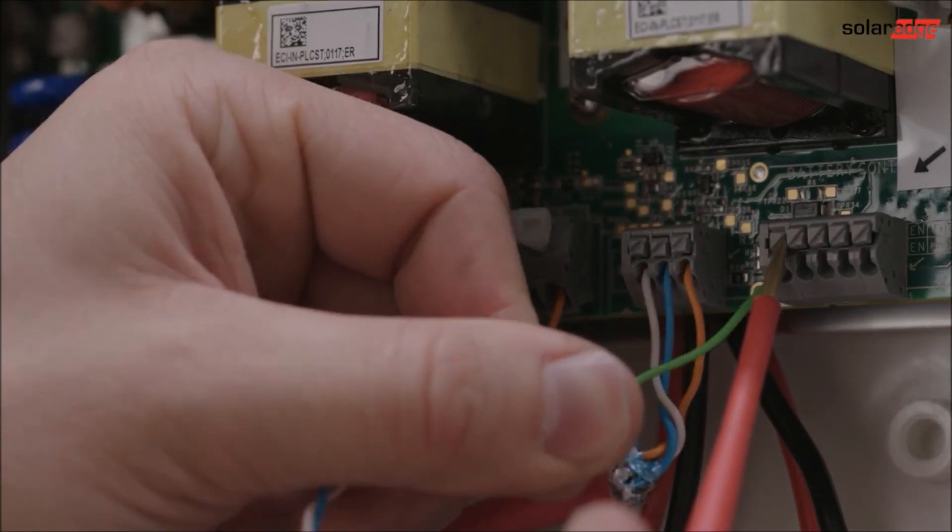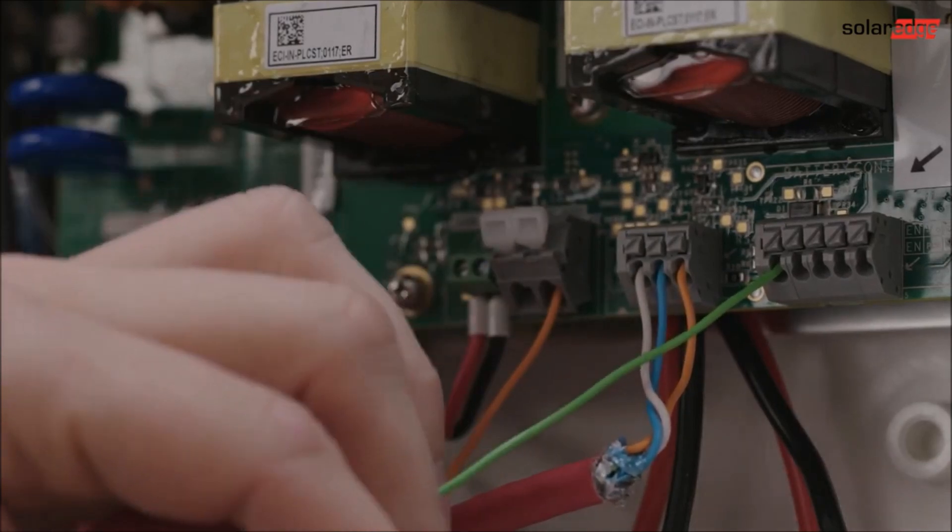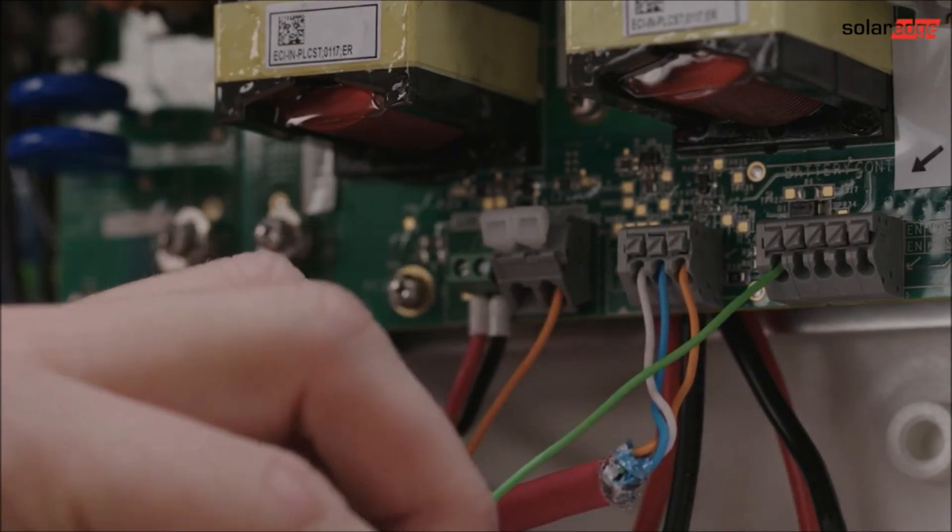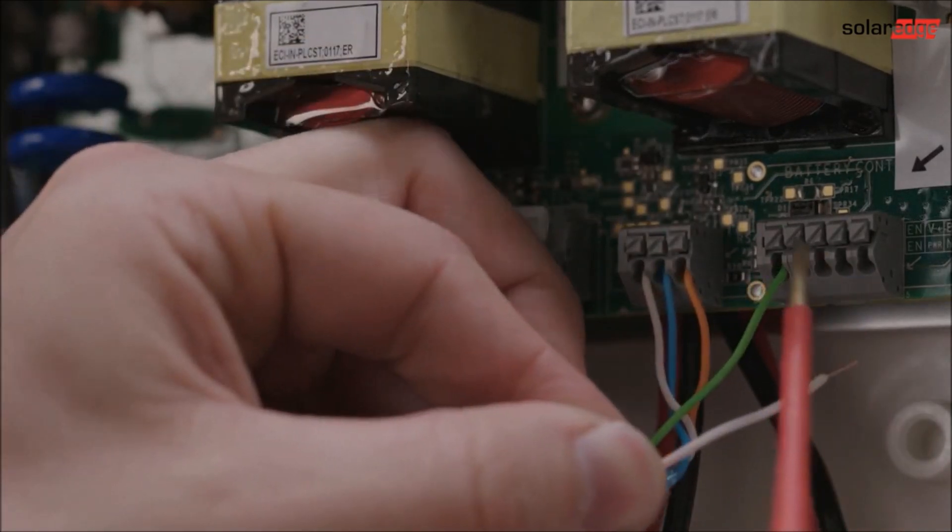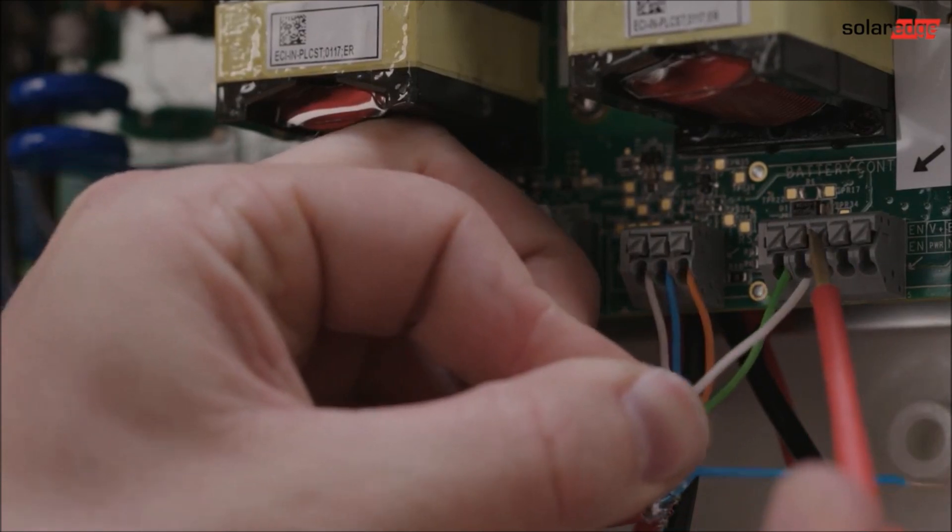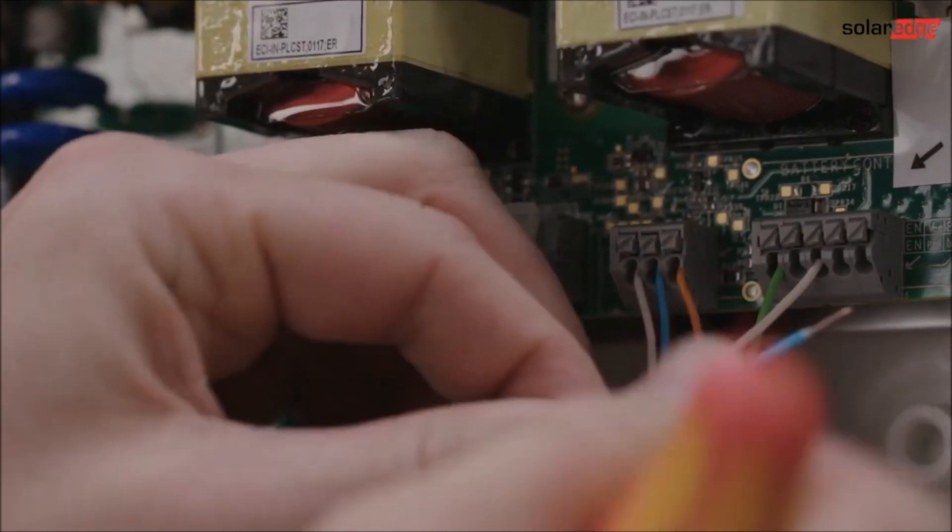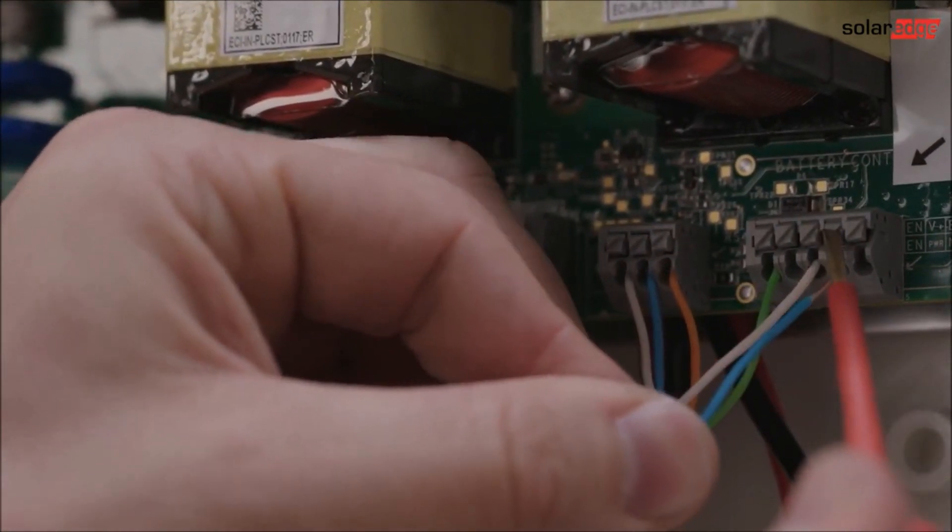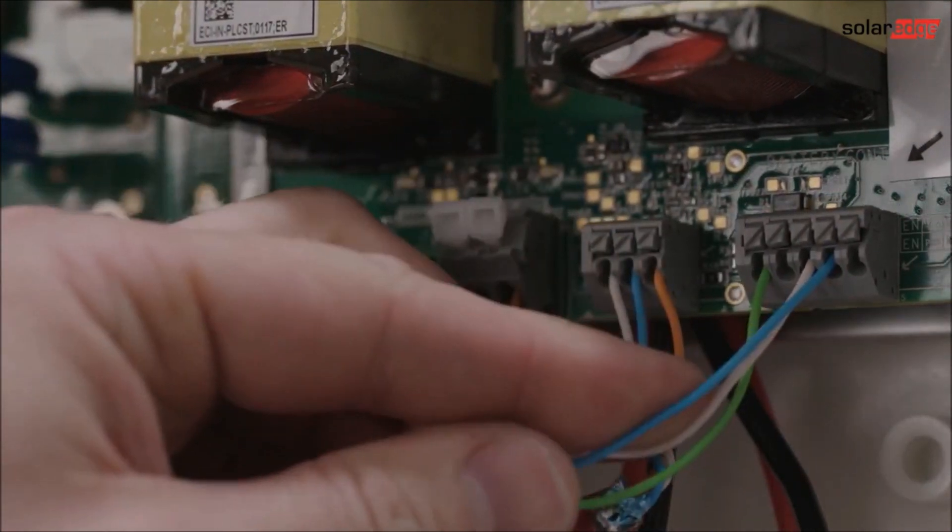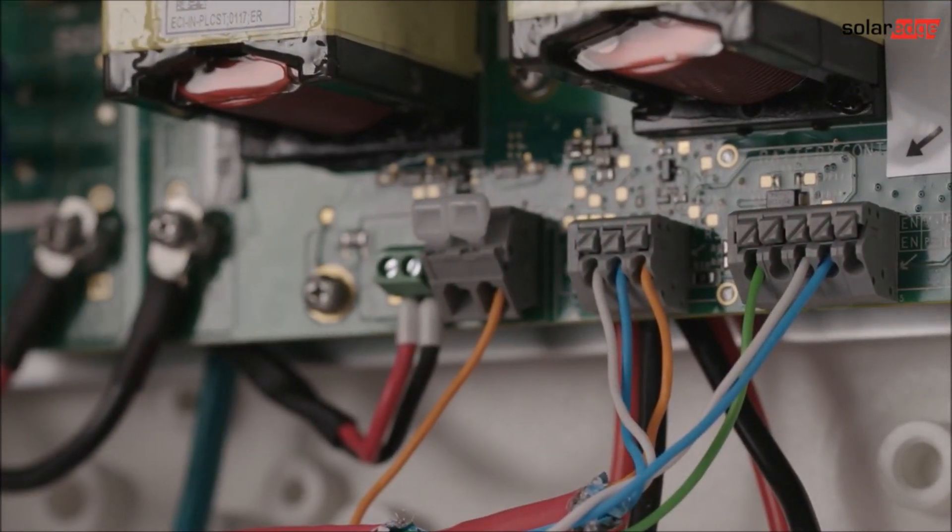Now connect the wires from the battery to the interface. Enable connects to enable, RS485 high connects to A+, RS485 low connects to B-, and battery ground connects to thermal minus or RS485 ground.